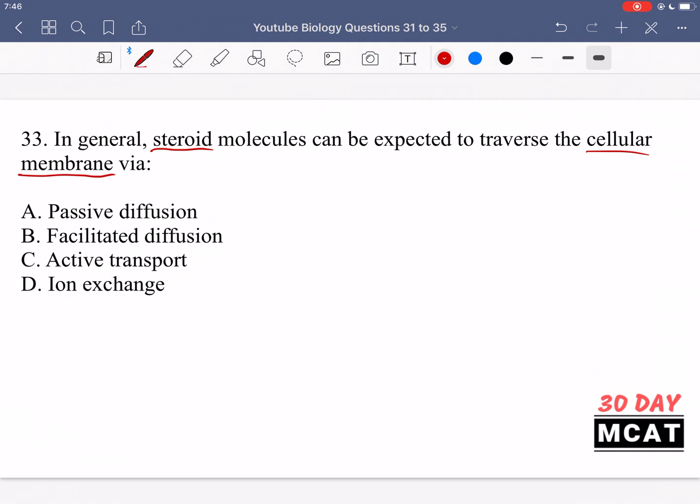It's a largely hydrophobic membrane. So something has to be pretty hydrophobic to get through this membrane. And steroid molecules, they do happen to be completely hydrophobic. They might have some small polar groups on them, but in general, the molecule is mainly hydrophobic.